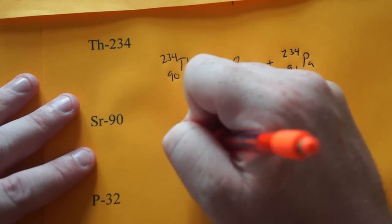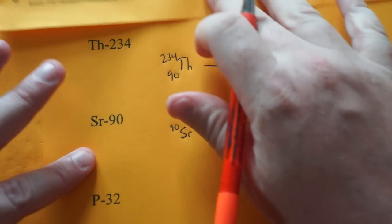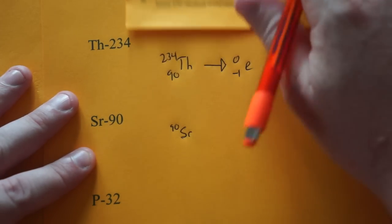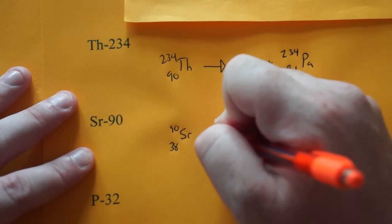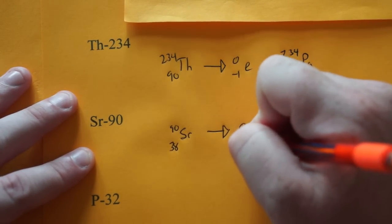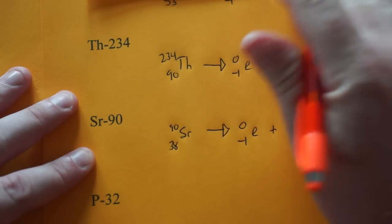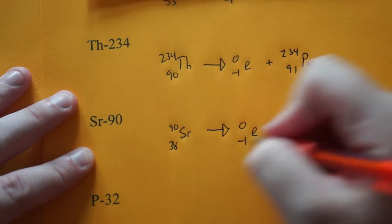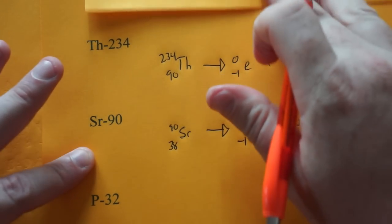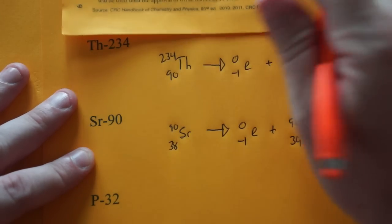Now, we've got strontium 90. SR 90. And we look up strontium, element number 38. And that's going to be 0 minus 1. I'll put the E there again. So we have 90 as our mass number and 39 as our atomic number. And that's yttrium, Y.